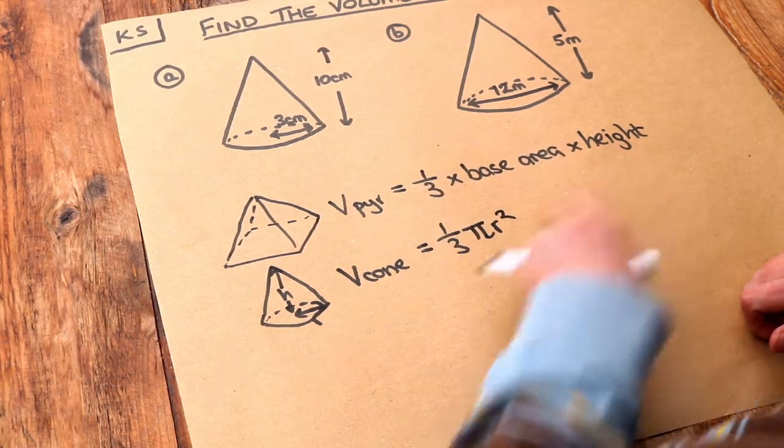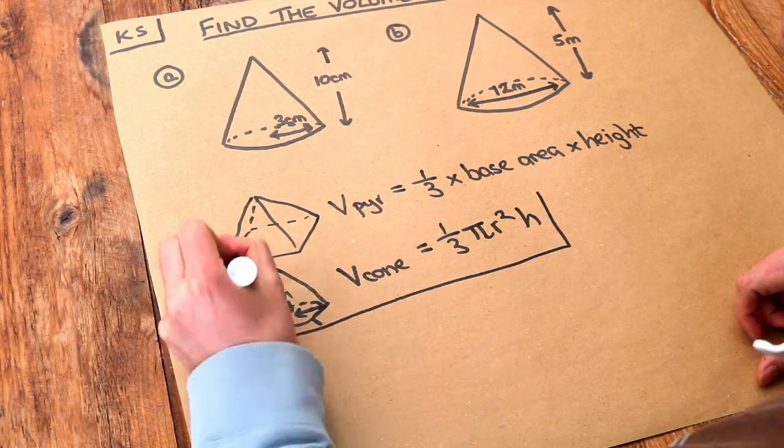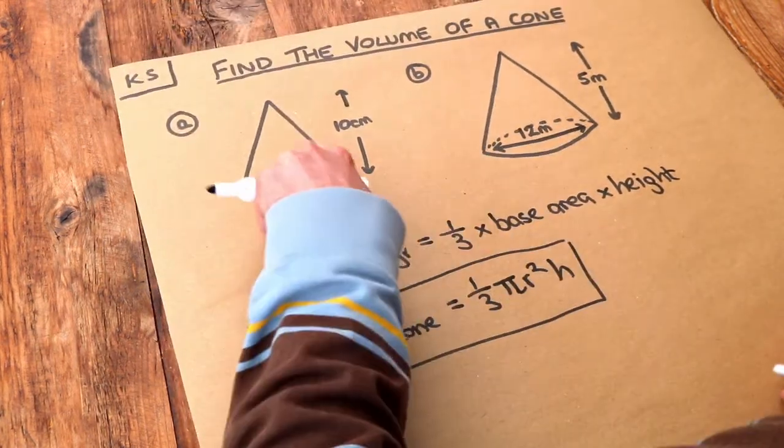Times by the height h, so we get this formula, which is just a special case of the volume of a pyramid. Let's apply it to these examples.